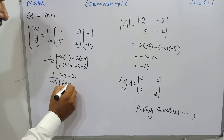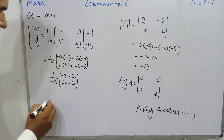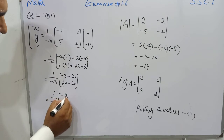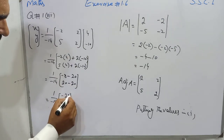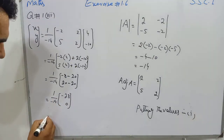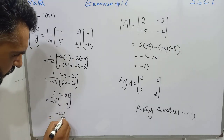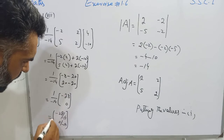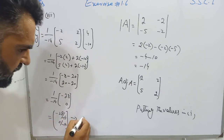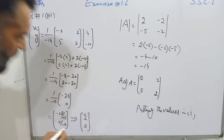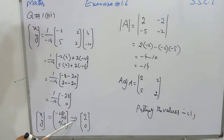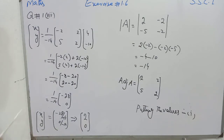Students, five times four is twenty, and two times ten is twenty as well. Simplifying: one over minus fourteen, into minus eight minus twenty gives minus twenty-eight, and for the second entry: twenty minus twenty gives zero. So we get minus twenty-eight over minus fourteen, and zero over minus fourteen. Comparing and dividing: x is equal to 2, and y is equal to 0. So x equals 2 and y equals 0.